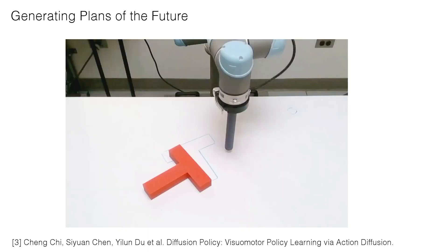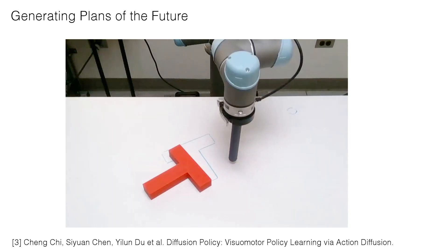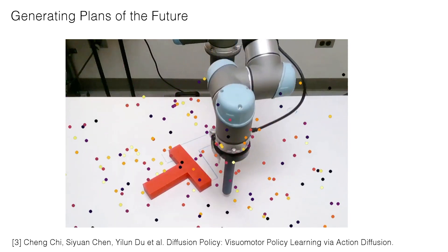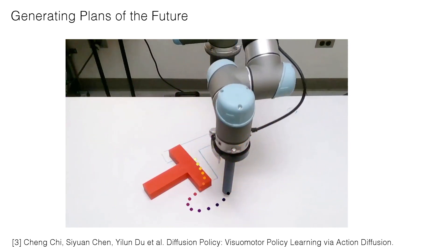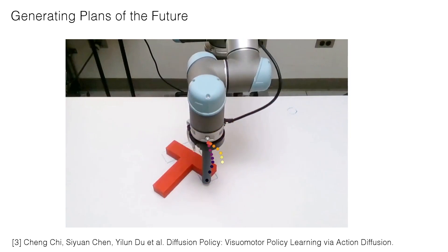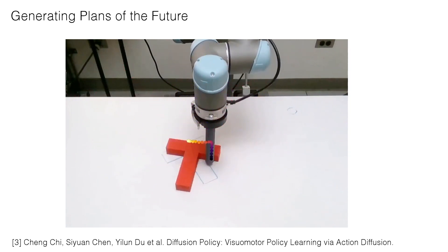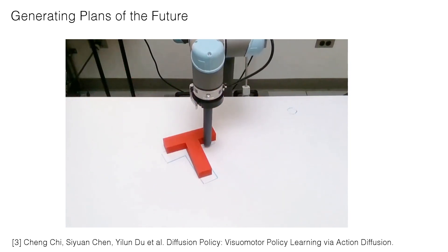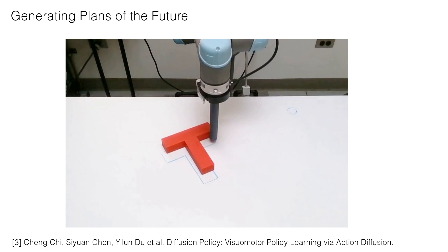I can also apply this on a real robot. My model takes the image you see here and wants to reorient this T block to the target configuration. It generates a set of trajectories for the actions it wishes to do in the future, and you can see over time it gradually rearranges the block to the target configuration.